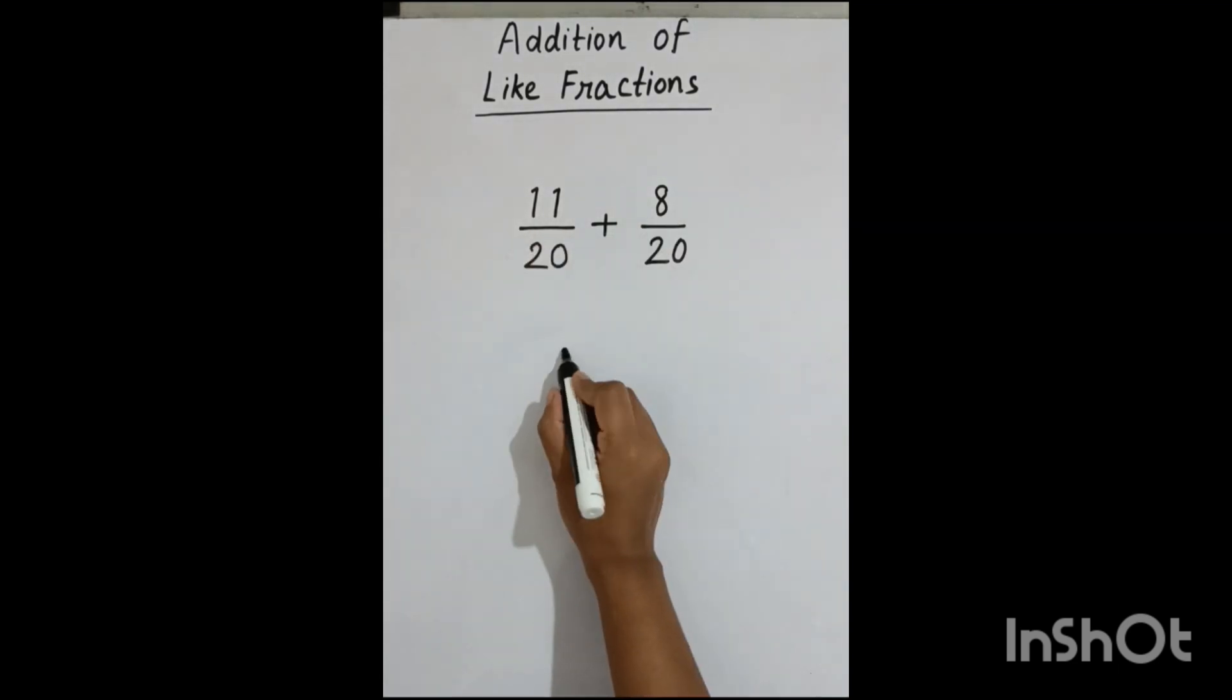We have to add the numerators, that means we have to add 11 plus 8, and we have to keep the denominator the same. 20 and 20, LCM is 20 only, so we have to keep the denominator the same.